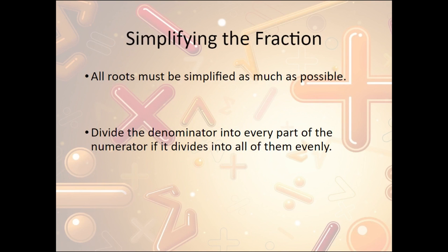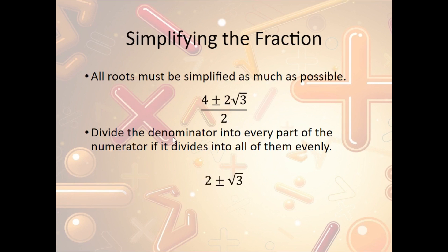Also remember to simplify fractions once you're done. Let's say you get 4 plus or minus 2 times the square root of 3, over 2. If the denominator goes into both the numerator terms evenly, you divide it out. If it only goes into one, you leave it. So 4 divided by 2 is 2, and 2 square root of 3 divided by 2 is just square root of 3. We end up with 2 plus or minus the square root of 3.